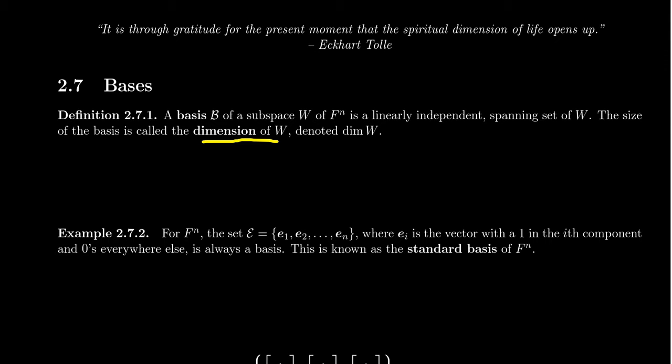Every line through the origin is a one-dimensional subspace, and every plane through the origin is a two-dimensional subspace. In fact, if we were to kind of generalize this notion, a flat through the origin, which itself is just a subspace, right?